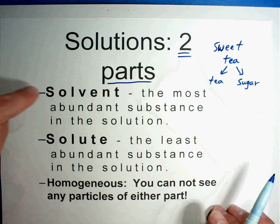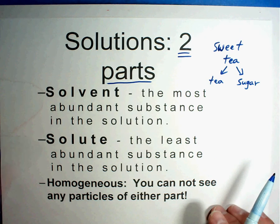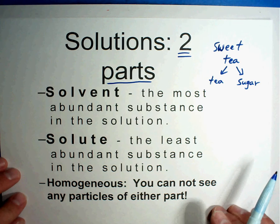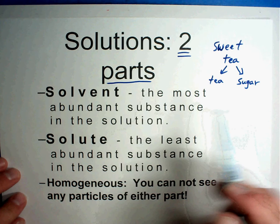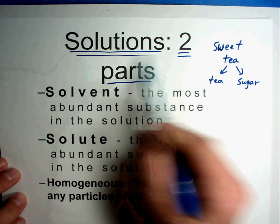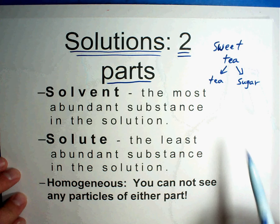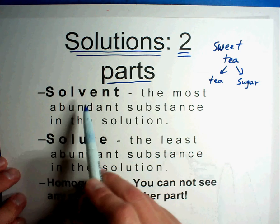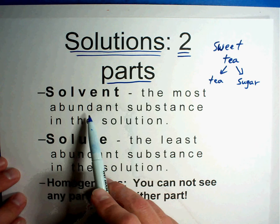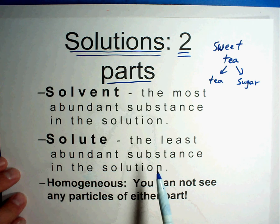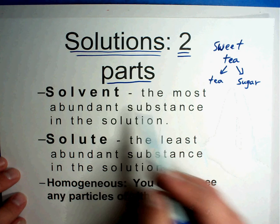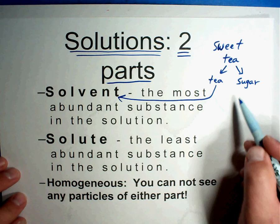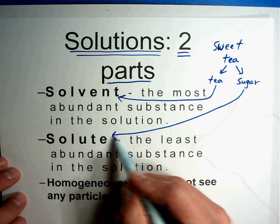Well let's look at our example of sweet tea. If I have a solution, which is one thing mixed into something else, that's what sweet tea is. What is the solute and which is the solvent? Well, the solvent is the most abundant substance in the solution. Is there more sugar or is there more tea? The solvent is going to be the tea, and the sugar is going to be the solute.